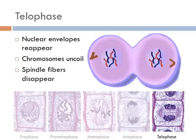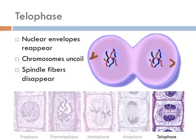Then magically, the nuclear envelope begins to appear — we still don't really know how this process happens. But when it happens, the cell is officially in the telophase part of mitosis. Also, the chromosomes begin to uncoil, the spindle fibers completely disintegrate, and then the two daughter cells move further apart.